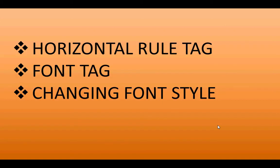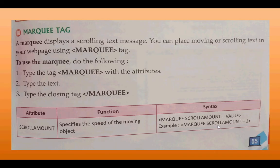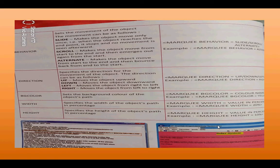Then the horizontal rule tag, which is used to insert a horizontal line. Then the font tag, used to change the font style, font color, and font size. Then the marquee tag — it displays a scrolling text message. You can place moving or scrolling text in your web page using the marquee tag. Attributes of the marquee tag are: scroll amount, behavior, direction, bg color, width, and height.